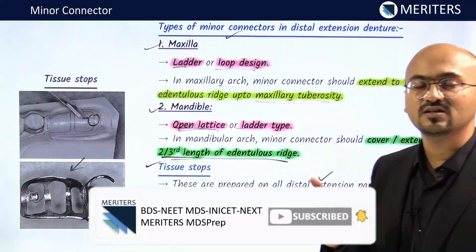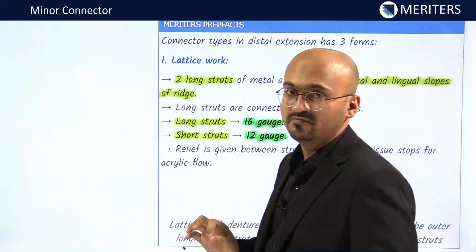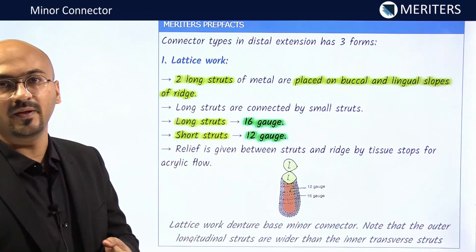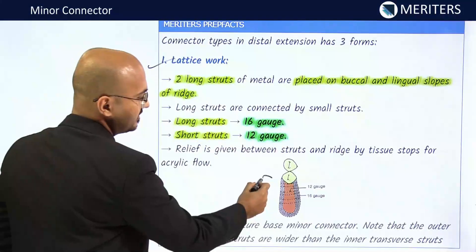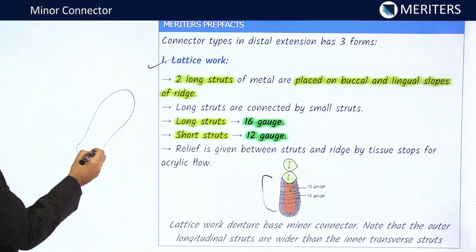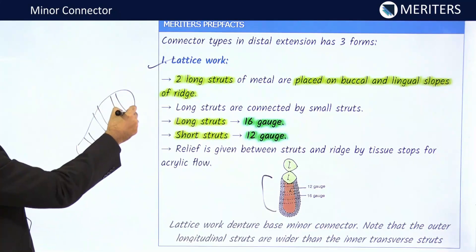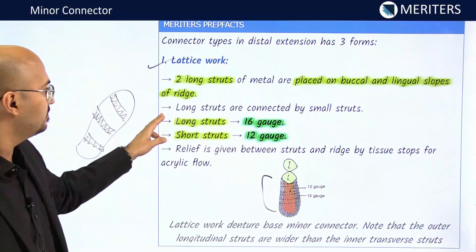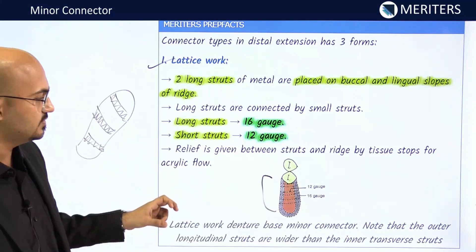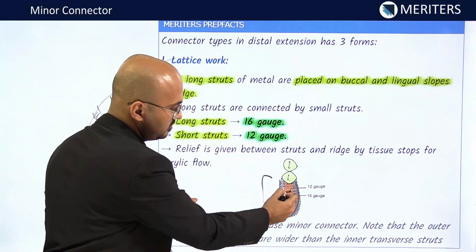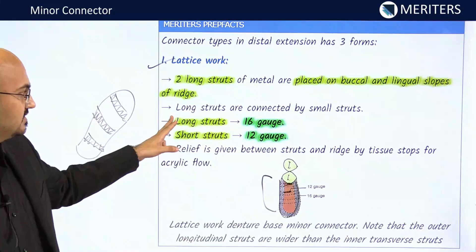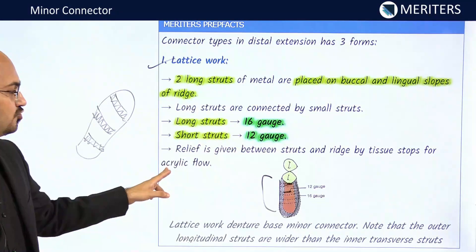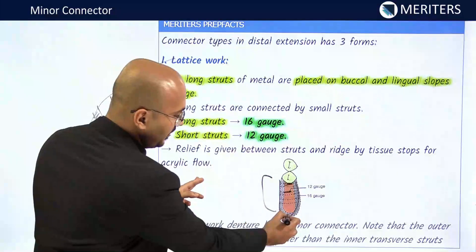There are three forms of minor connectors for denture bases: lattice type, mesh type, and bead type. The lattice type has struts — two long struts of metal placed buccal and lingual along the ridge, connected by smaller struts. The long struts are made of 16-gauge wax and the short struts are made of 12-gauge wax (which is thicker). Relief is given between the struts and the ridge, with tissue stops for acrylic flow. Lattice is also known as open construction.